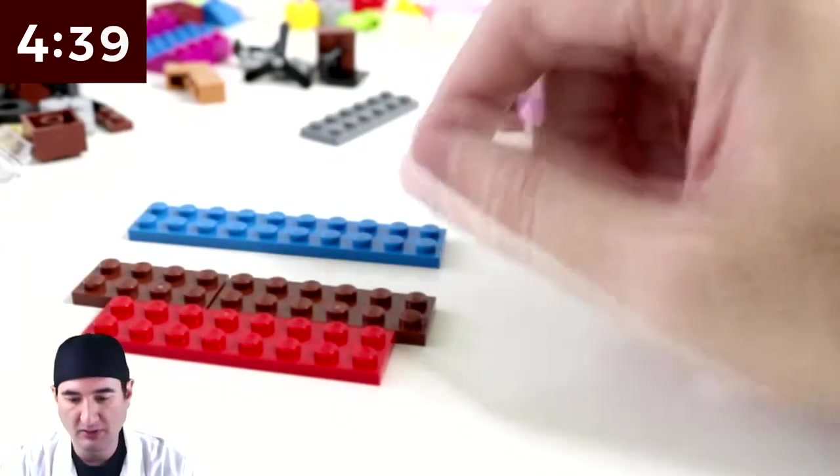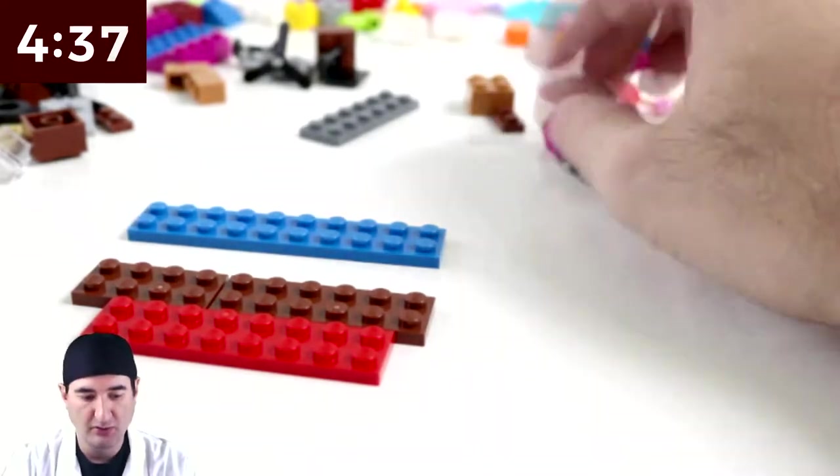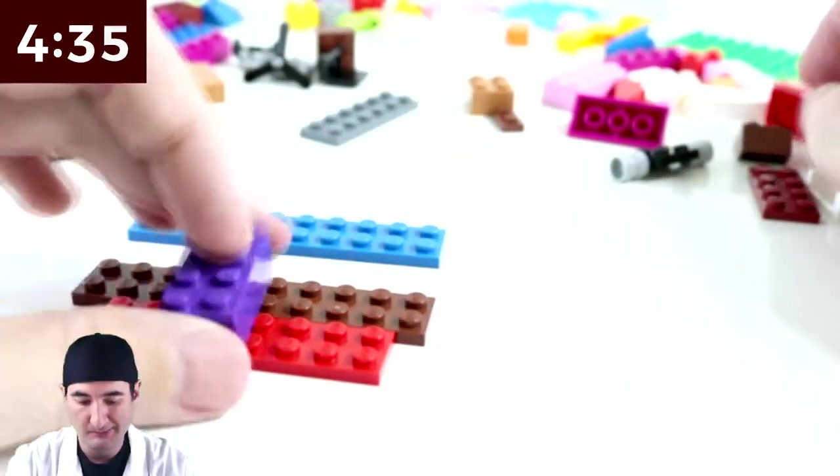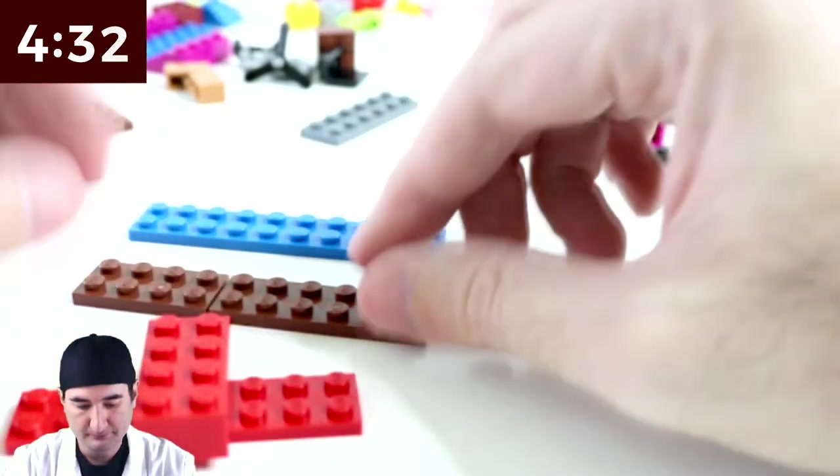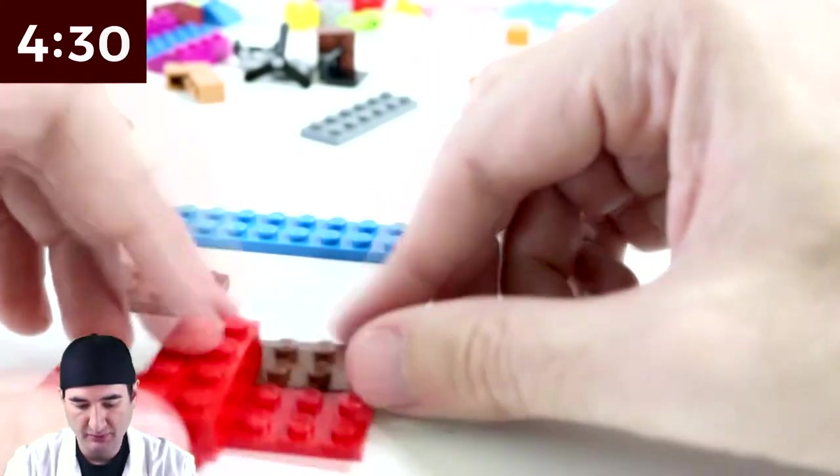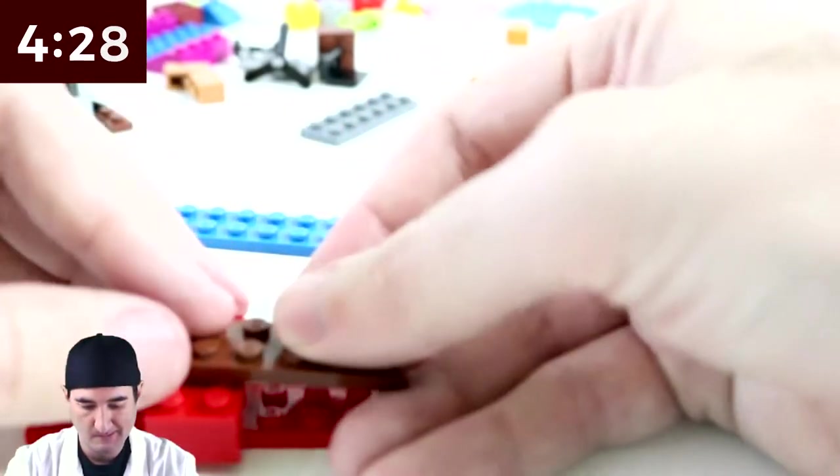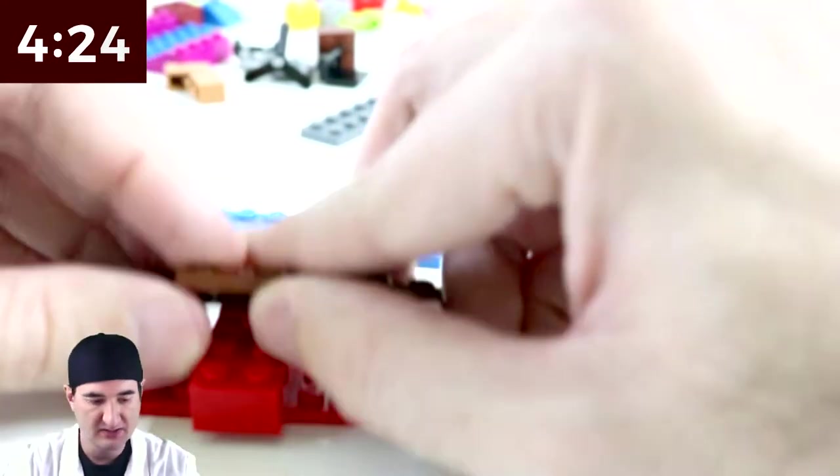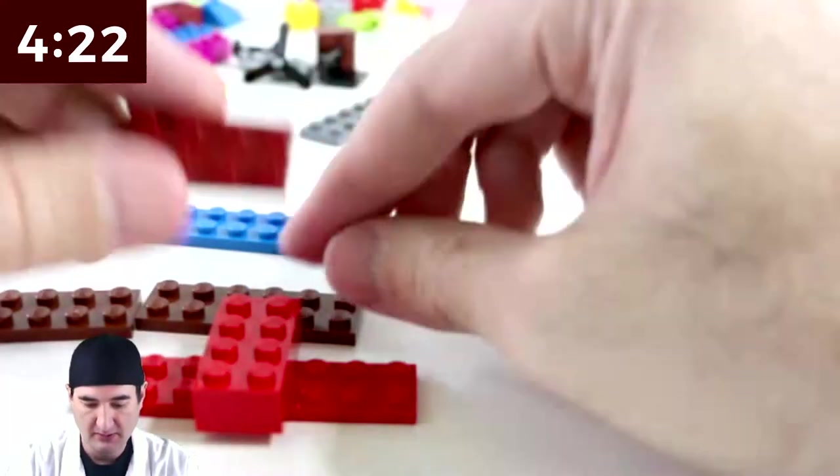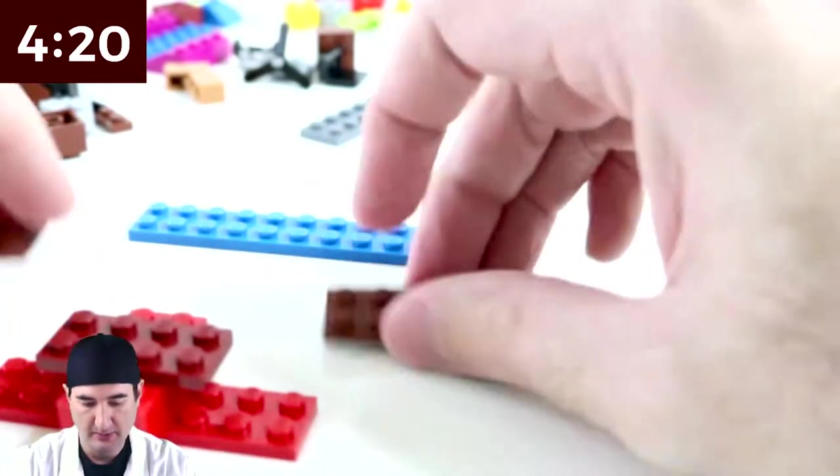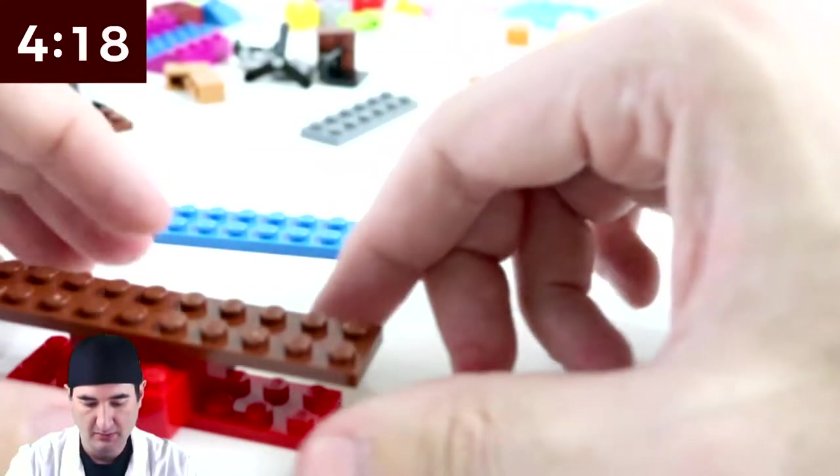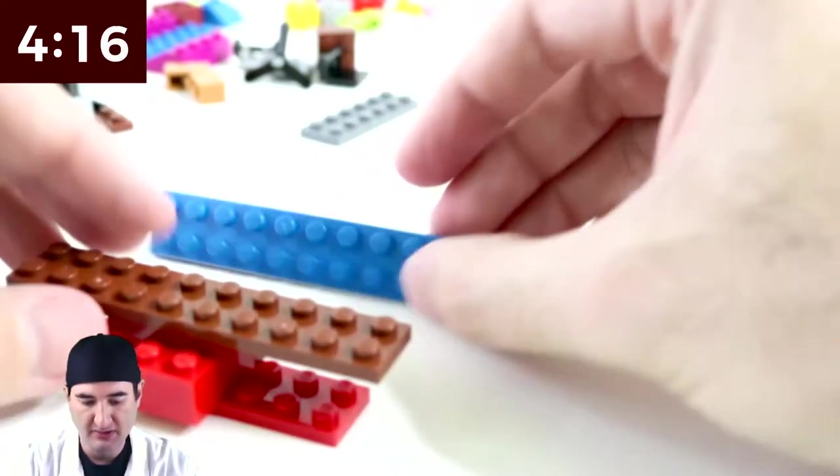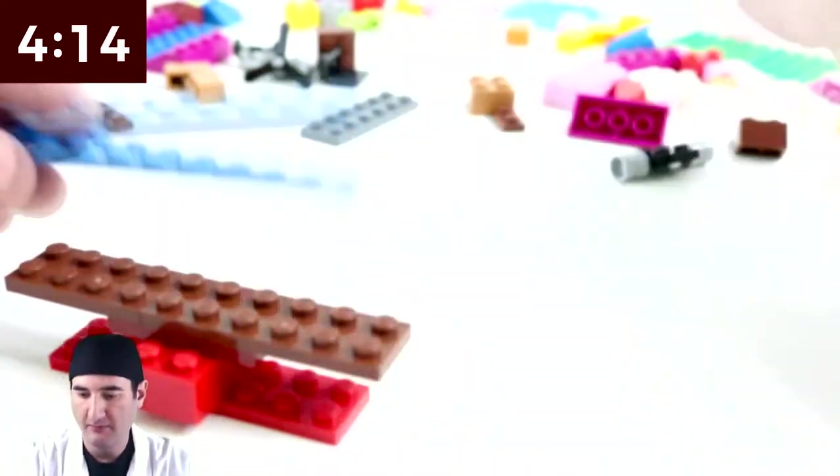So now we need to work on the fuselage. So it was a Red Airplane, and maybe what we'll do is something like this. Okay, so now that has to be supported. So this goes there. That goes there. That works. And then I've got to build up from there.